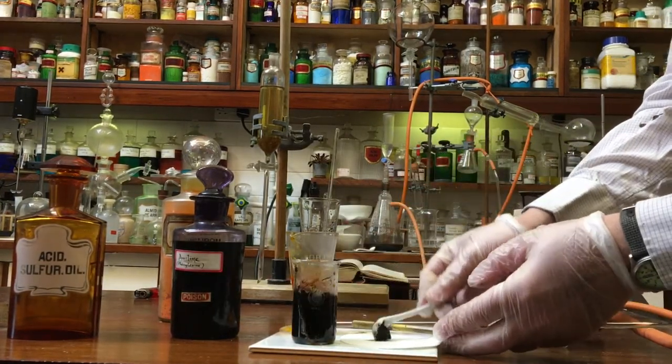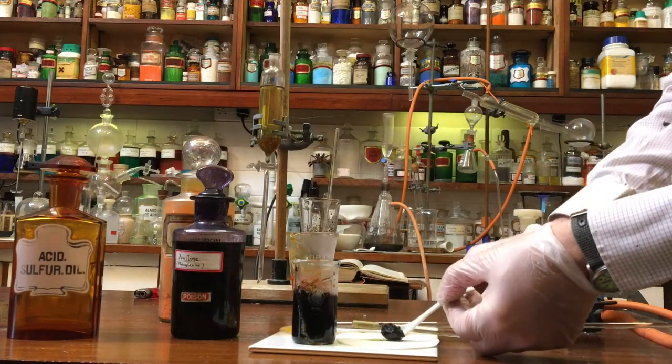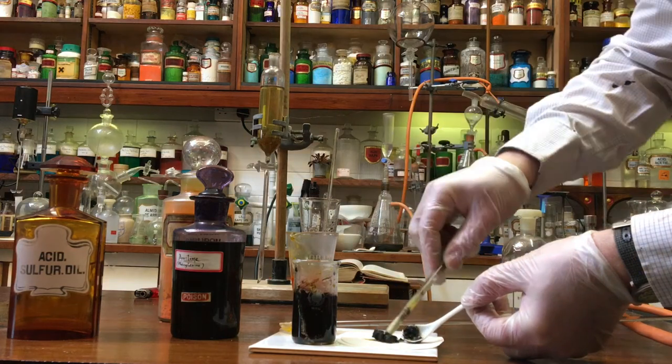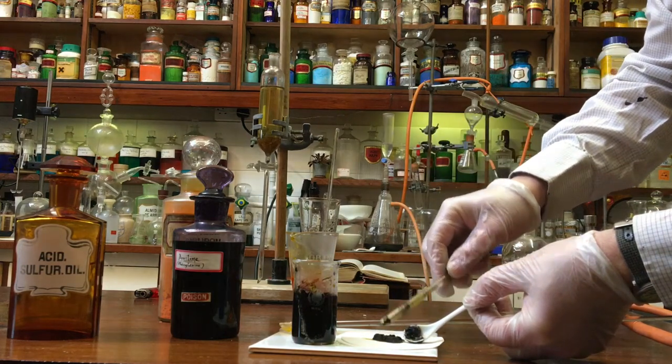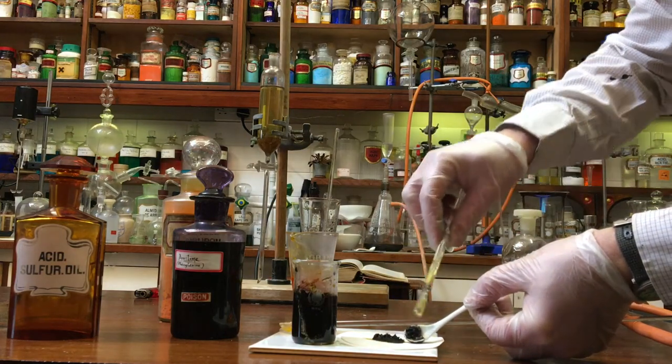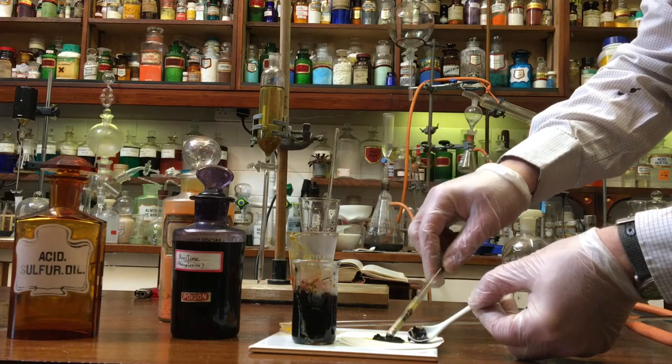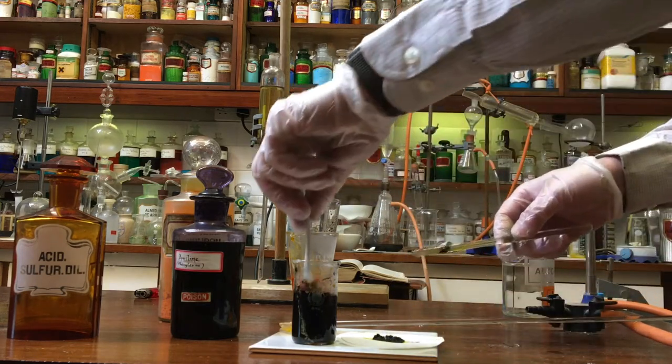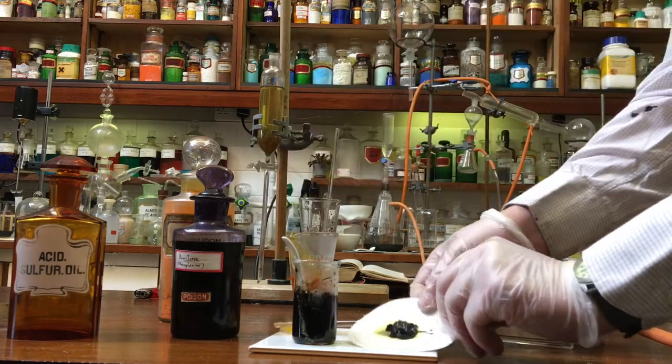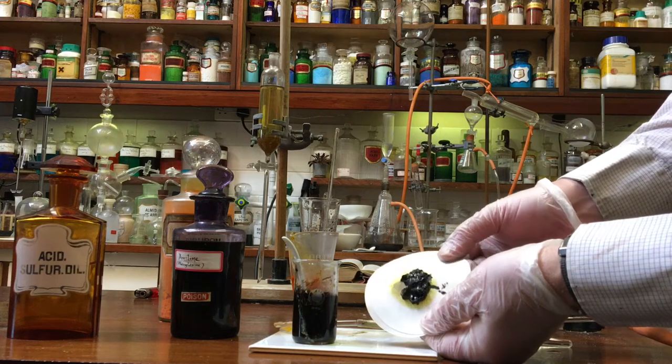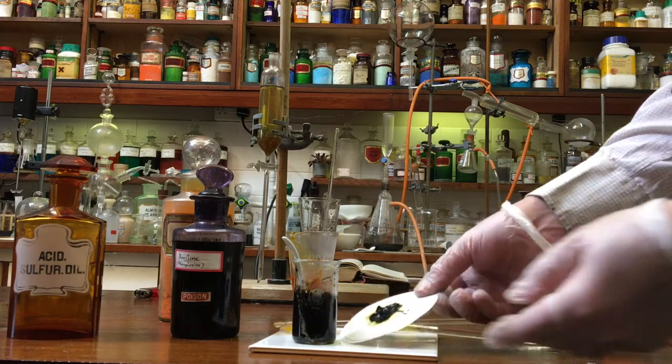Now what do we have? We have a beautiful black tar-like substance which I'm just going to try and scrape off this little spatula onto some filter paper. As you can see, we're using flasks and bottles which would have been around about the same time as William Perkin. This is the 162nd anniversary of the discovery of this dye that made him so rich and famous.